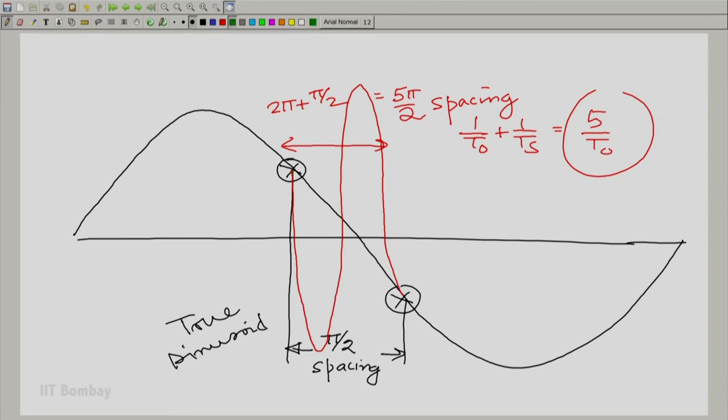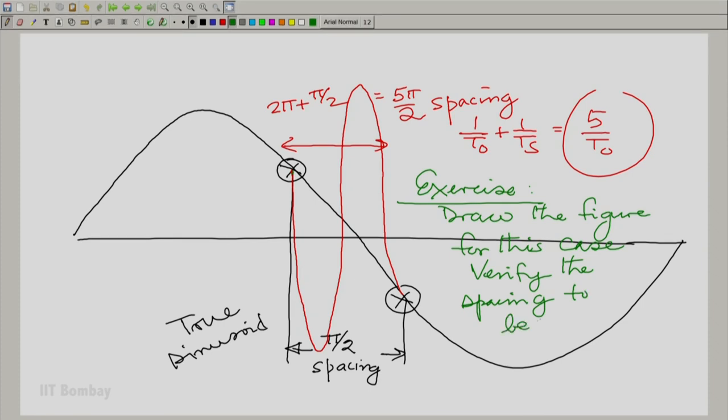And let me now draw the last one, where you had not quite a whole cycle lost, but you came on the wrong edge. What is the situation there? The situation there would be, in fact, I leave it to you as an exercise here. Draw the figure for this case. Verify the spacing to be 3π/2 instead of π/2, which means the frequency becomes 1/T_s - 1/T_0, which is 3/T_0. I leave this to you as an exercise to verify the whole idea both in terms of frequency and the phase change.